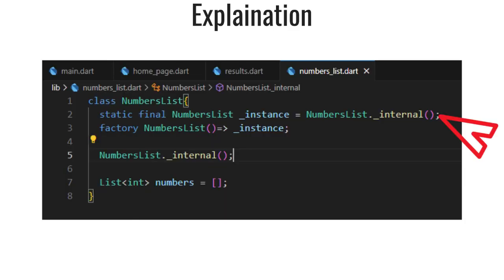Now let's understand these lines of code. A static and final variable underscore instance is declared within the NumbersList class. This variable is marked as final, which means it cannot be changed once it's assigned. It is used to store the singleton instance of the NumbersList class. The underscore instance variable is initialized by calling a private constructor named internal of the same class. This constructor is used to create the unique instance of NumbersList. A factory constructor is then defined for the NumbersList class — a factory constructor is used to control the creation of objects and is typically used for implementing the singleton pattern. In this case, the factory constructor returns the existing instance of the class, ensuring that only one instance of NumbersList is ever created and reused.